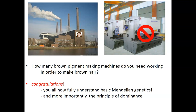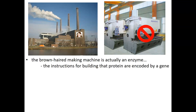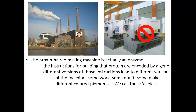Dominant traits are dominant because they require only one functional allele. Brown hair is dominant for this very reason — either allele working, or both working, allows the cell to make the brown pigment. Only if both alleles are mutant and no functional enzyme can be made do we have the recessive trait. In this lecture we're talking about dominant disorders, where the mutant allele is actually the more powerful allele, encoding the stronger, more powerful protein.